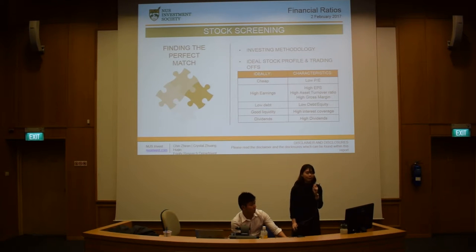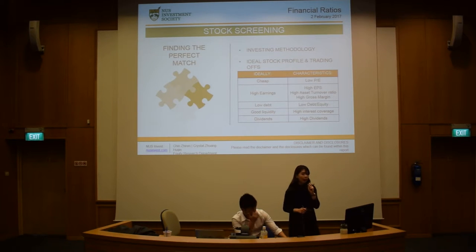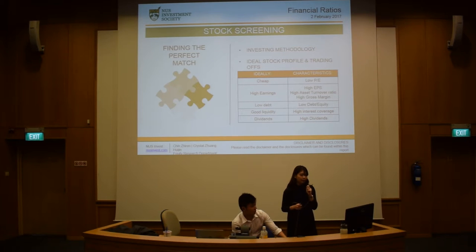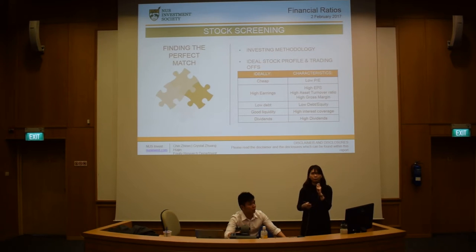Next we move on to stock screening — finding the perfect match. Apart from investing methodology and the ideal stock profile, you also want to look at the characteristics of the company based on its ratios. First, you want a cheap company — meaning a low PE ratio. Next, you want high earnings: high EPS, high asset turnover, and high gross margin. Then, you want low debt, because you don't want a company that owes a lot of money. Next, you want good liquidity — high interest coverage and the ability to pay off its debts fast. Finally, dividends, because when you hold your shares you want to get your money back in the form of dividends.